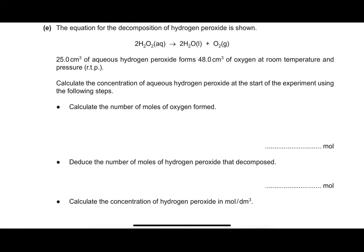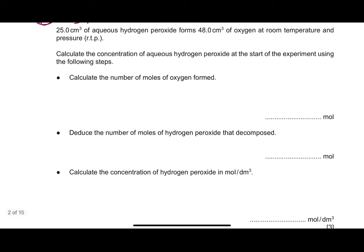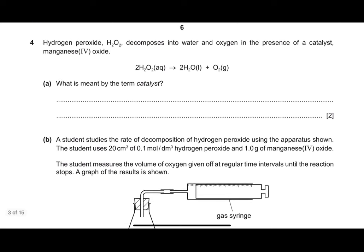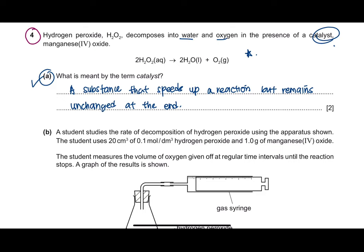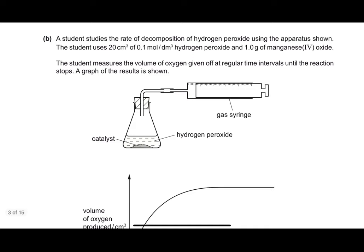Question 3 is about calculation and has been covered in chapter 4 in our previous videos. This is the question from February-March 2016, question 4. Hydrogen peroxide decomposes into water and oxygen in the presence of a catalyst, manganese oxide. This question is similar to the one we did before, and the first question again asks: what is meant by the term catalyst? A catalyst is a substance that speeds up a reaction but remains unchanged at the end.